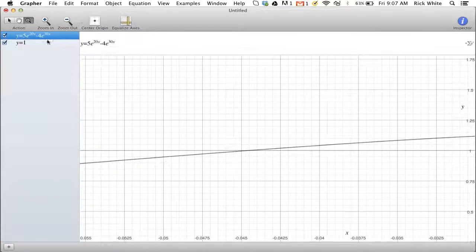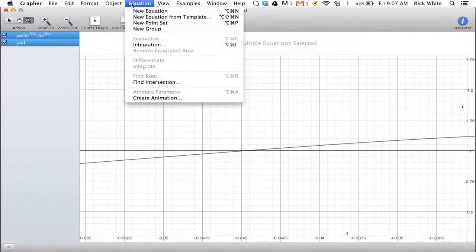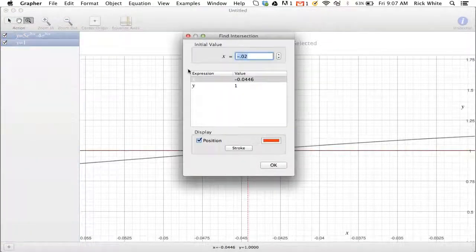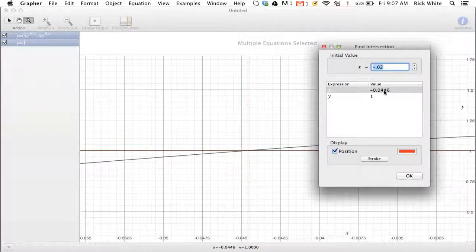You can highlight both of them by pushing shift and going to equation, find intersection, and if it doesn't give it to you exactly, that's negative 0.04.